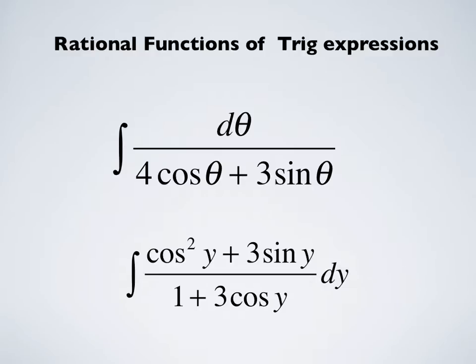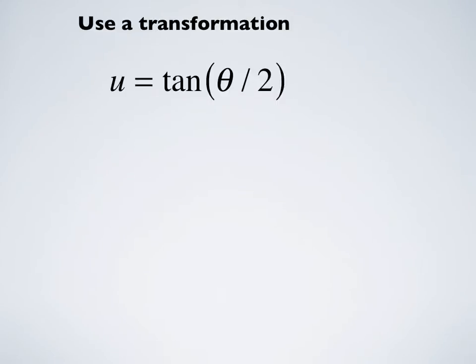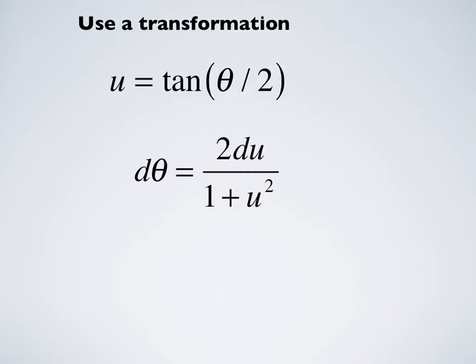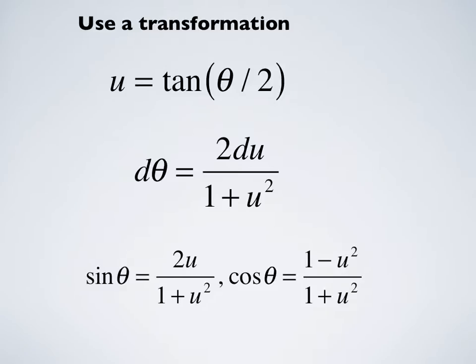Looking at these, it may not be obvious how you would do them, and we're going to use a transformation of variables. We're going to say that u = tan(θ/2), and when you do that you find that dθ = 2du/(1+u²). You'd also find that sinθ = 2u/(1+u²) and cosθ = (1-u²)/(1+u²).